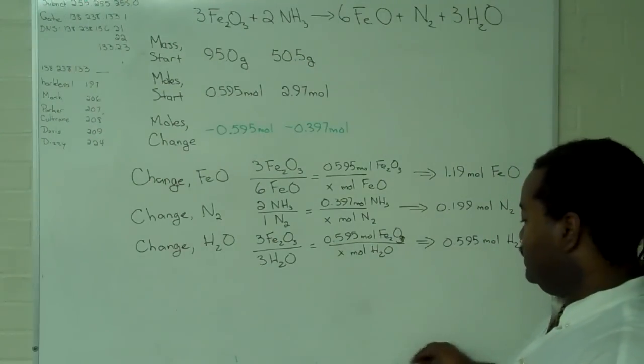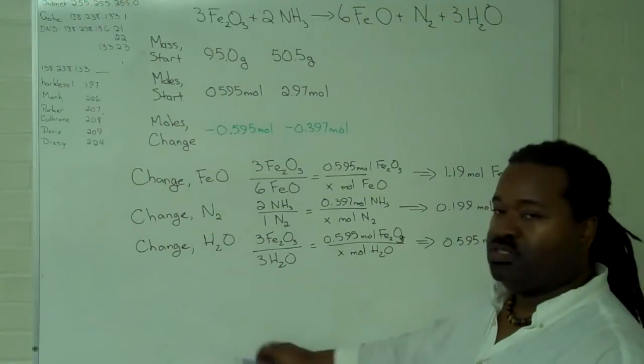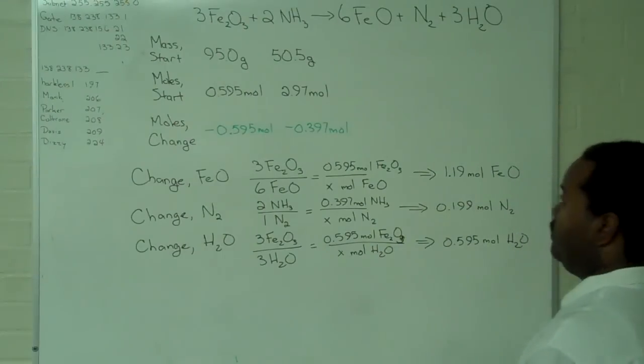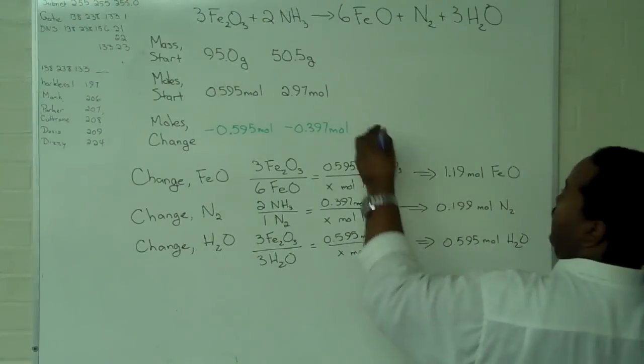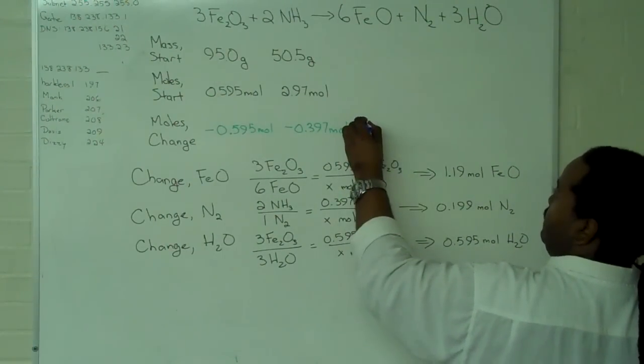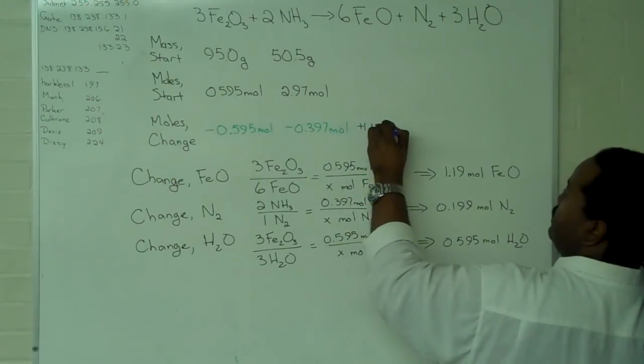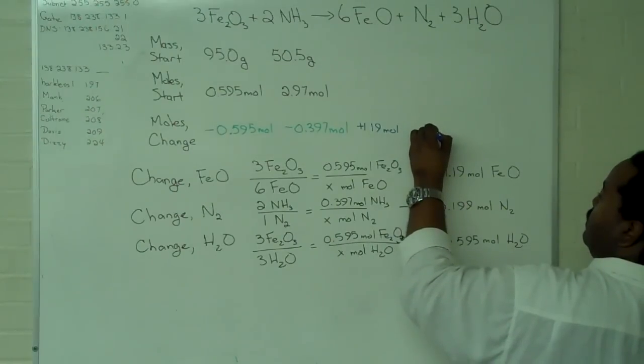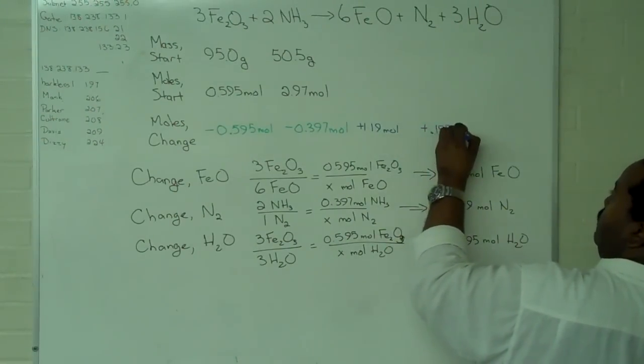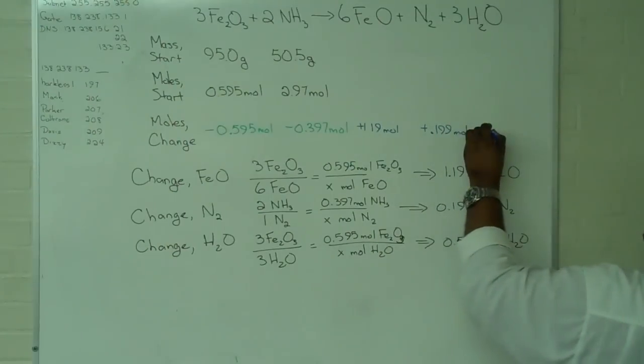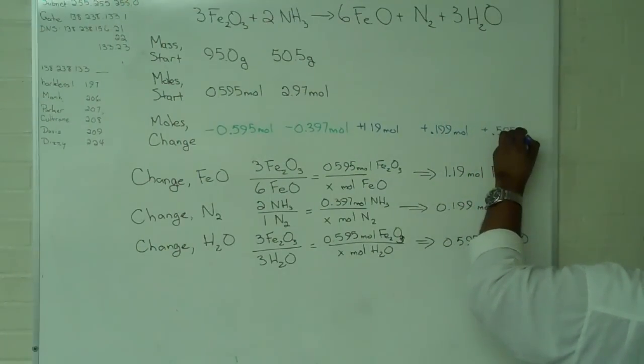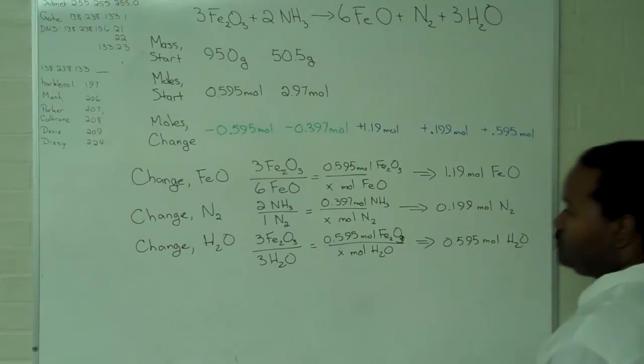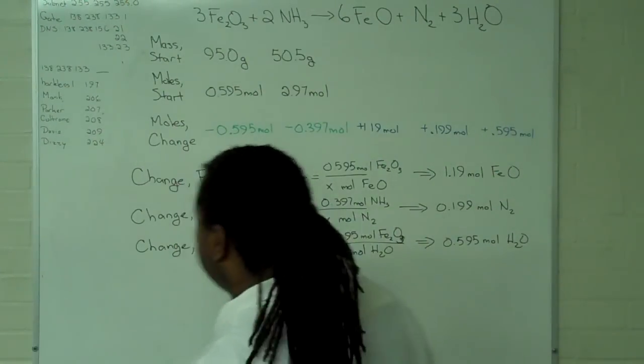Now, once that part's done, we've determined the change in moles for everything we have. I can simply copy this over, recognizing that because these are products, I'm going to have a positive change for the nitrogen, plus 0.199 moles, and for the water, plus 0.595 moles. Now that that step is complete, the remainder is very straightforward.